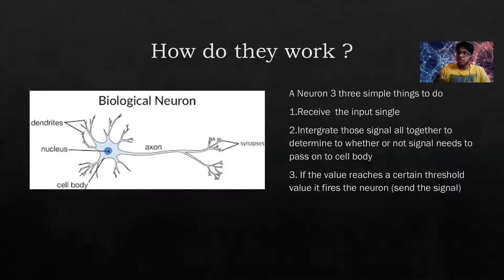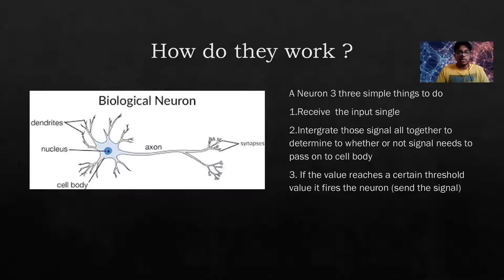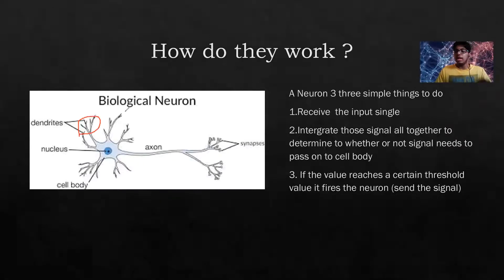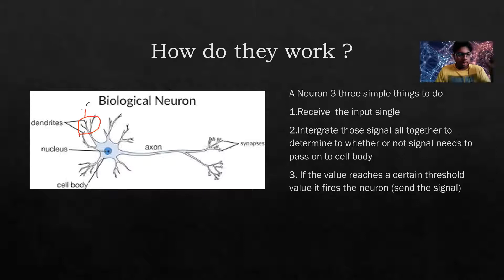First, receive the input signal from the five senses of your body — skin, tongue, nose, ears, and eyes. Second, integrate those signals all together. Third, determine whether or not to pass those signals to the cell body. The dendrites are how the neuron takes in the signal — so if your skin gets touched by a hot cup of coffee, dendrites take in parameters like temperature and position.